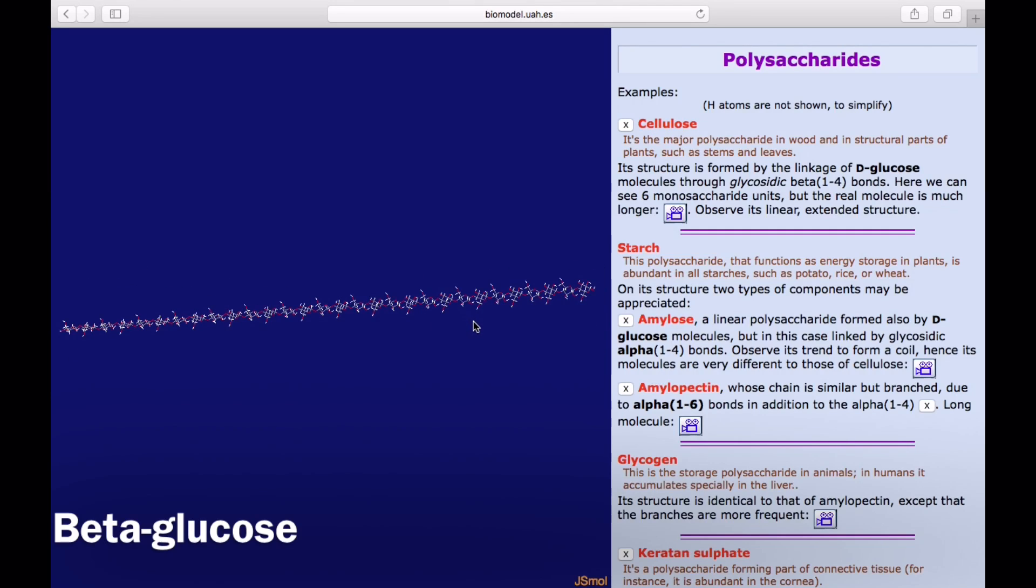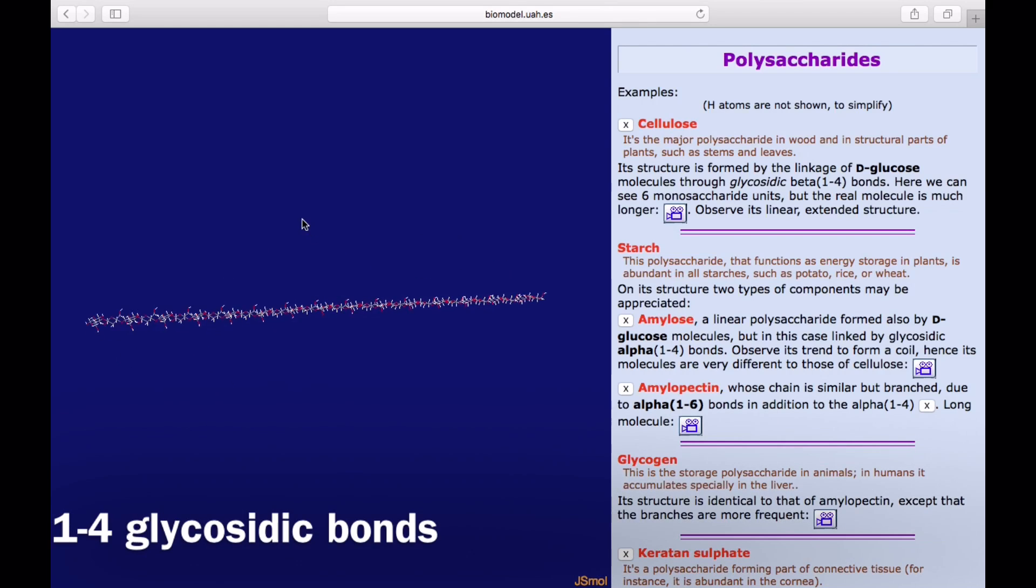Cellulose is made of a long chain of several hundred to many thousands of beta-glucose units. These glucose molecules are linked together with 1-4 glycosidic bonds.